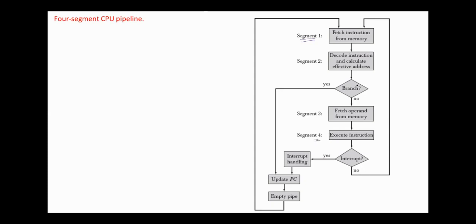If we have a branch instruction, the program counter should be updated and we have to empty the pipeline. In the case of an interrupt, the pipeline should be emptied as well. We assume here that segments are of equal duration.